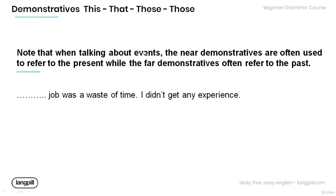Note that when talking about events, the near demonstratives are often used to refer to the present, while the far demonstratives are often used to refer to the past. Have a look at the sentence over here and fill in the gap using the appropriate demonstrative. This job was a waste of time. I didn't get any experience.